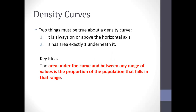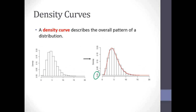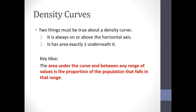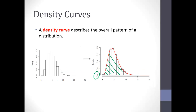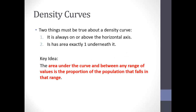A few properties about density curves: by definition they always have to be positive — on the horizontal axis or above. The lowest value is zero. And the area beneath that curve will always add up to one. How many of you have had calculus? Most of you — very good. So you know how to calculate an integral. We're not going to get into that here, but if you could imagine calculating the area underneath this curve, it would add up to one.